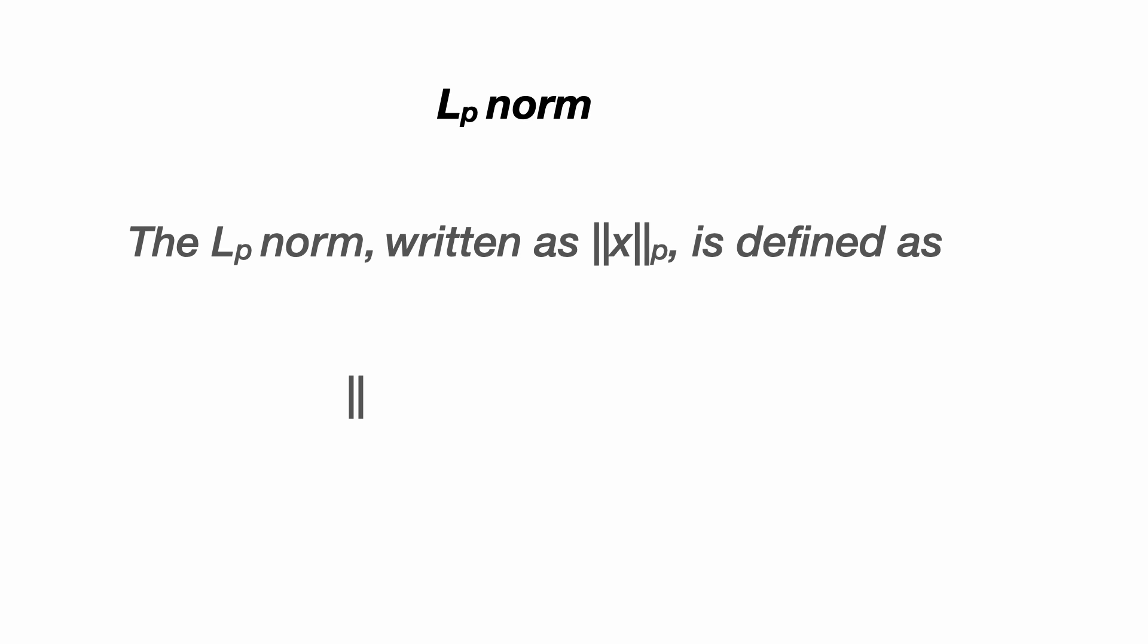The LP norm of a vector x, written as two sets of vertical parallel lines with a subscript p, is defined as the sum over the components of x of the pth power of the absolute value of the components, and then taking the pth root of that sum. We also must have that p is greater than zero.